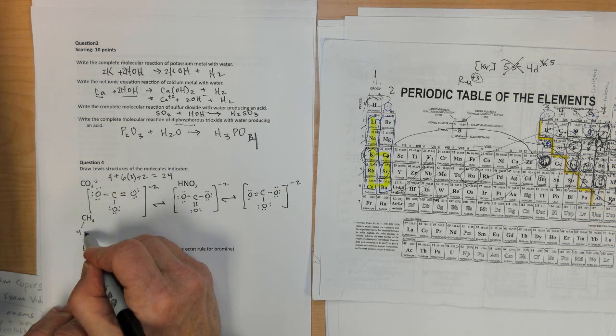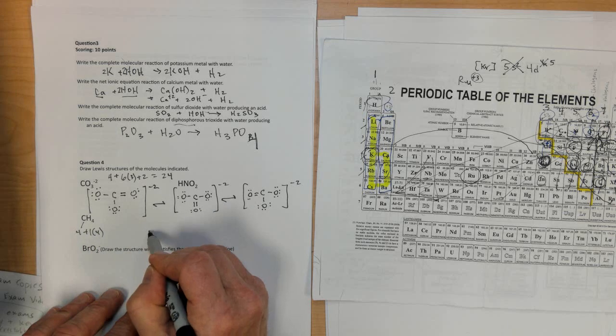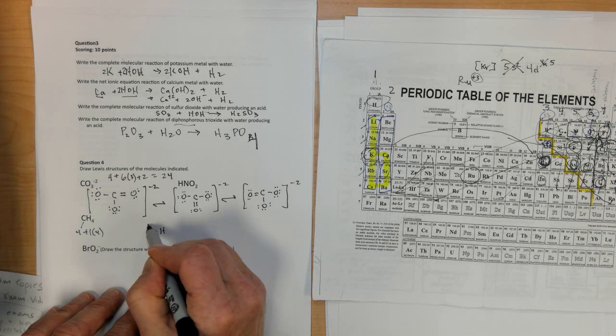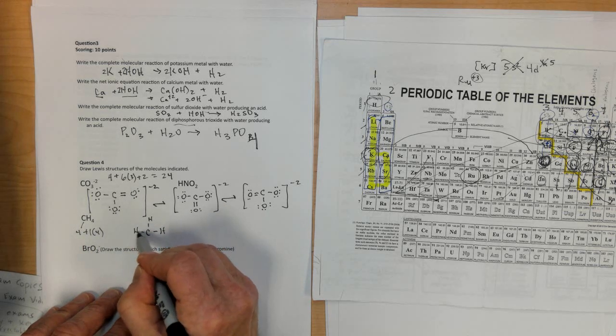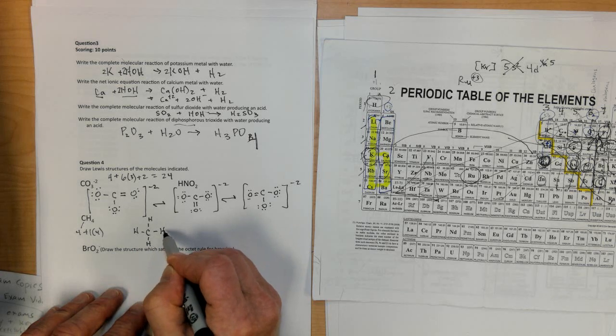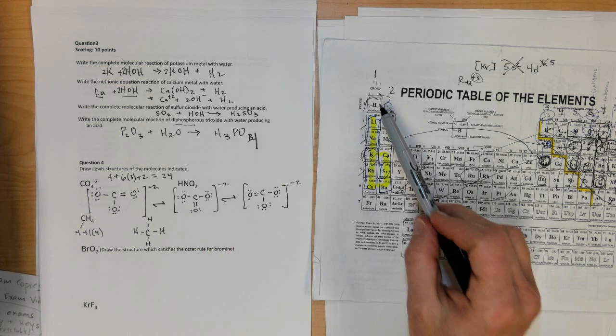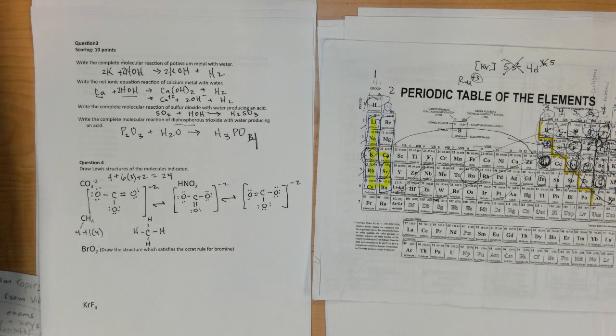Next, CH4. Carbon is 4. Hydrogen is 1. There's 4 of them. That's 8 total. Put carbon in the middle because it's the least electronegative. No, I'm sorry. It's not actually. But it's the only one that can go in the middle. That's not hydrogen because hydrogen can never go in the middle.